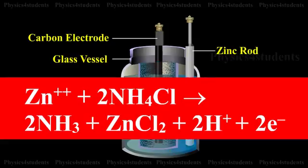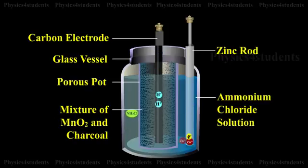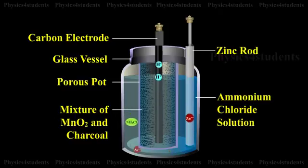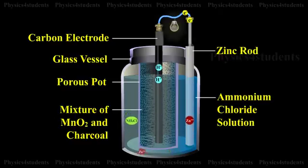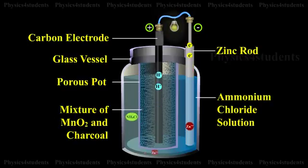The ammonia gas escapes, and the hydrogen ions diffuse through the pores of the porous pot and react with manganese dioxide. In this process, the positive charge of the hydrogen ions is transferred to the carbon rod. When the zinc rod and carbon rod are connected externally, the two electrons from the zinc rod move towards the carbon and neutralize the positive charge, so current flows from carbon to zinc.